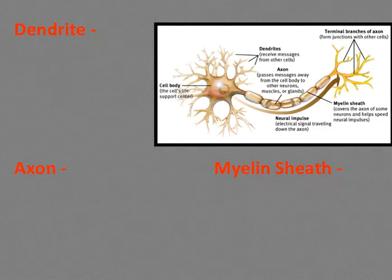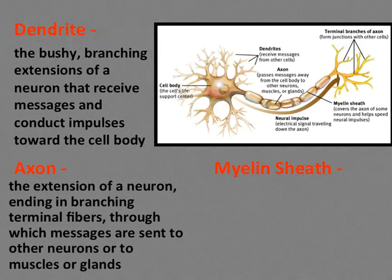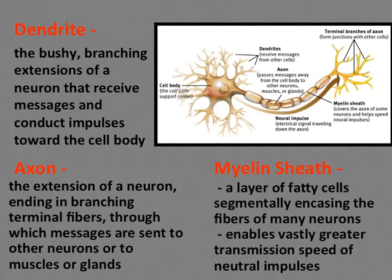Let's review the important parts of the neuron. The dendrite consists of bushy, branching extensions that receive messages and conduct impulses toward the cell body — they are the receivers. The axon is the extension of a neuron ending in branching terminal fibers, through which messages are sent to other neurons, muscles, or glands — the axon is the messenger. The myelin sheath is the fatty layer of cells that segmentally encases the fibers of the neuron, enabling neural impulses to travel at a much quicker rate.